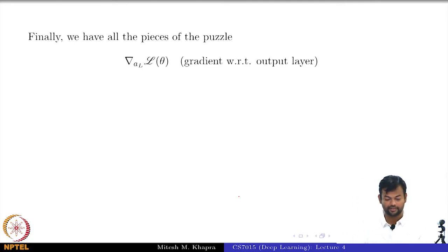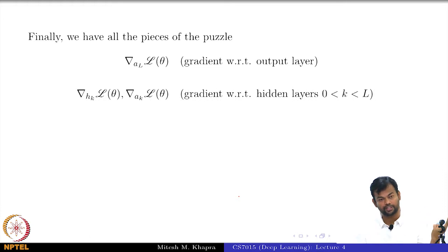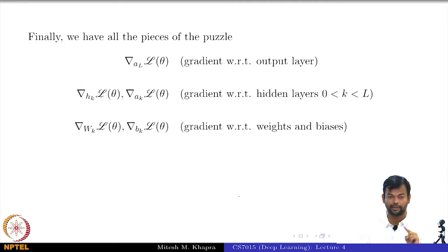We have all the pieces of the puzzle: we have the gradients with respect to the output layer, that was the special layer because the output activation function is different, we have the gradients with respect to all the hidden layers. That means I have the gradients with respect to the activations as well as the pre-activation, the h's as well as the a's, and I also have the gradients with respect to the weights and the biases. This is all index agnostic, that means I am just using k as the index everywhere. I have a generic formula which applies at any layer for the weights as well as the activations and the pre-activations.